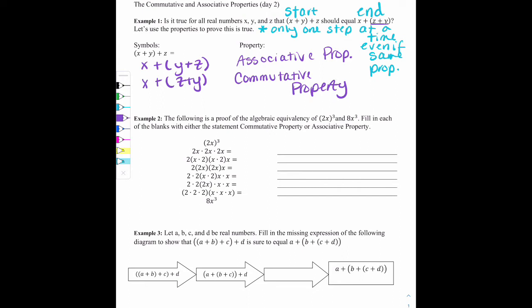In example two, it says the following is a proof of the algebraic equivalency of (2x) cubed and 8x cubed. Fill in each of the blanks with either the statement commutative property or associative property. So we want to go through and talk about which property was being illustrated. And this first line can be a little tough. If you look at from (2x)³ to 2x times 2x times 2x, one would feel like they might want to write that that was just an expansion. But making groups and taking groups away all has to do with regrouping. So if it has to do with regrouping, it's the associative property.